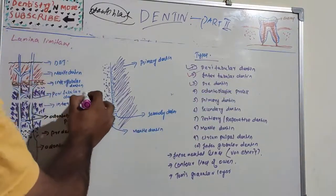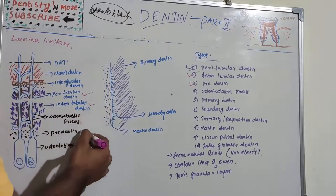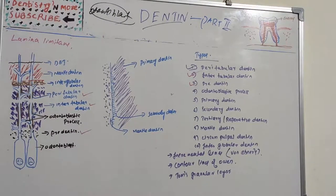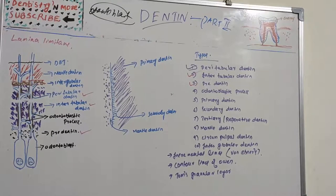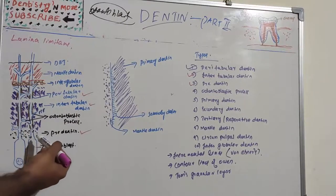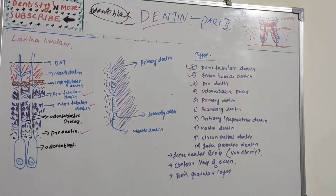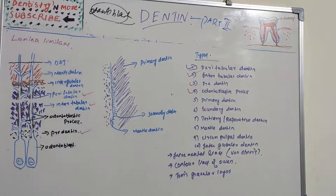Predentine is the first dentine to be formed, located adjacent to the pulp where the dental papilla gives rise to the first layer of dentine. It is not mineralized. The collagen fibers undergo mineralization at the predentine zone and then predentine becomes dentine, after which a new layer of predentine forms circumpulpally. Predentine is the unmineralized, first-formed dentine adjacent to the dental pulp.